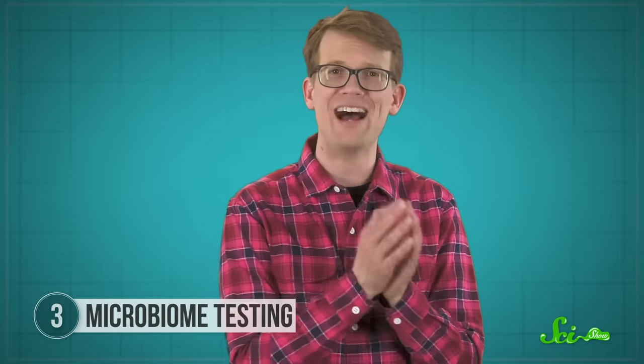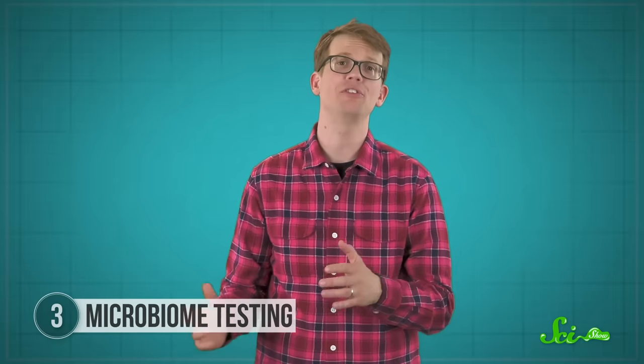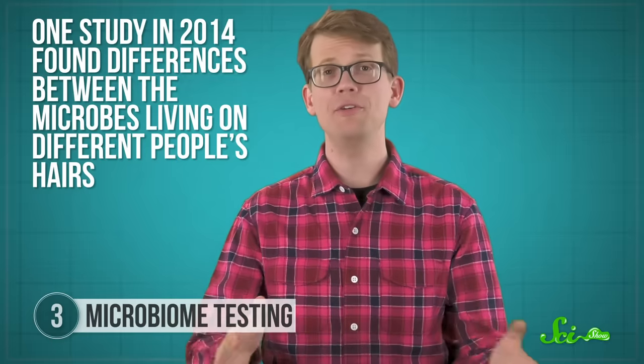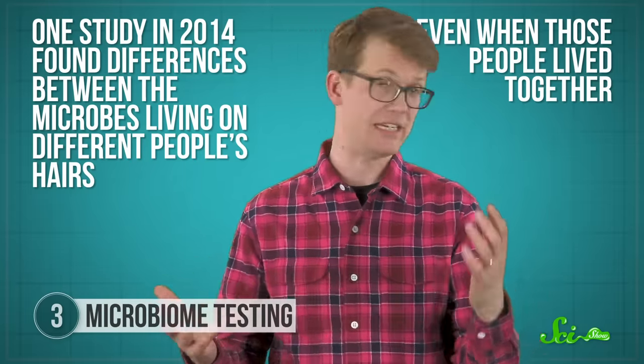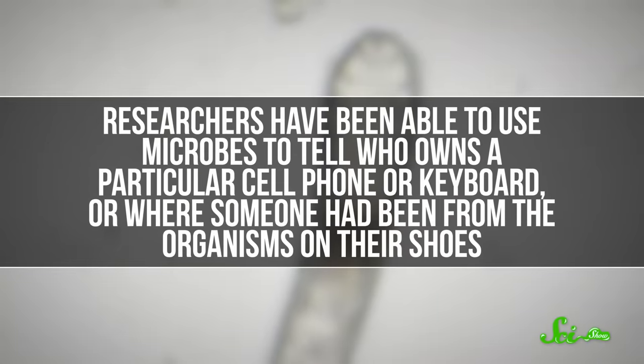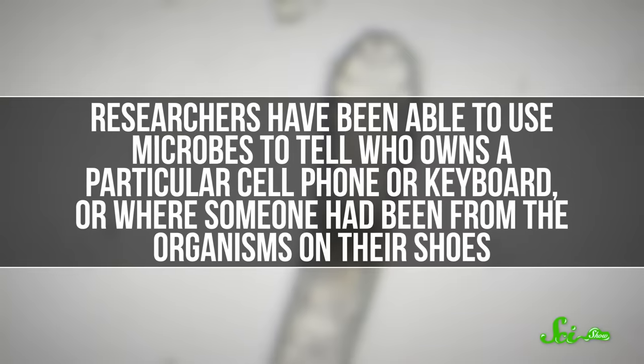That's because microbes are everywhere. They live on our skin, in our mouths and stomachs, and on our hair, forming what's known as our microbiome. And it turns out, our microbiomes aren't all the same. One study back in 2014, for instance, found differences between the microbes living on different people's hairs even when those people lived together. And researchers have been able to use microbes to tell who owns a particular cell phone or keyboard, or where someone had been from the organisms on their shoes.